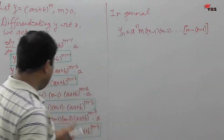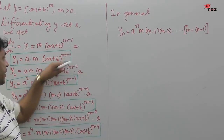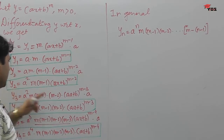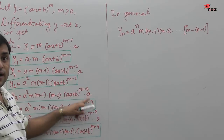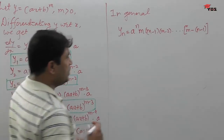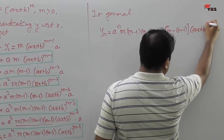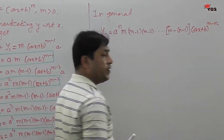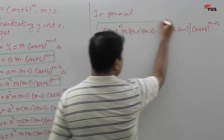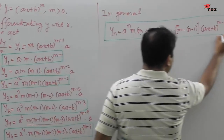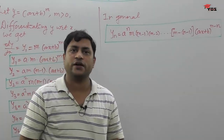For the remaining term, when we take the first derivative we get (ax+b)^(m-1), second derivative gives (ax+b)^(m-2), third derivative gives (ax+b)^(m-3), and so on. Continuing this way, the nth derivative of y = (ax+b)^m is yn = a^n·m(m-1)(m-2)···(m-n+1)·(ax+b)^(m-n).